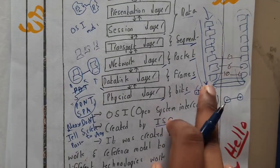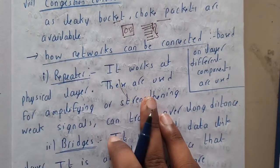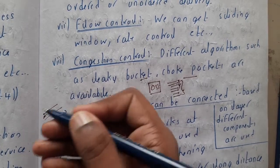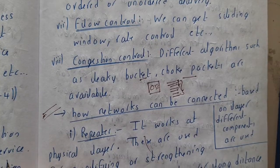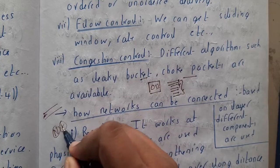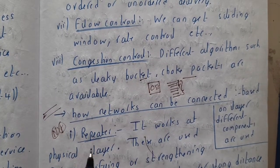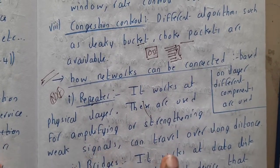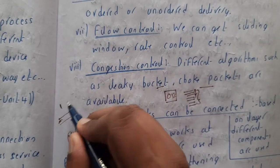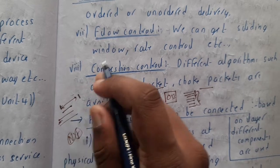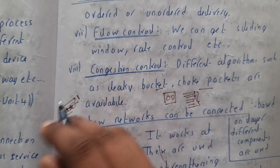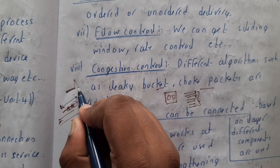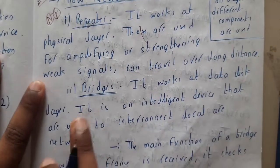The first device is the repeater. When you send a signal through an optical fiber or copper cable, the energy is not constant — noise and friction reduce the signal strength over distance. Repeaters work at the physical layer and are used to amplify or strengthen weaker signals so they can travel longer distances. For example, sending a signal from India to the USA would require thousands of repeaters in between.